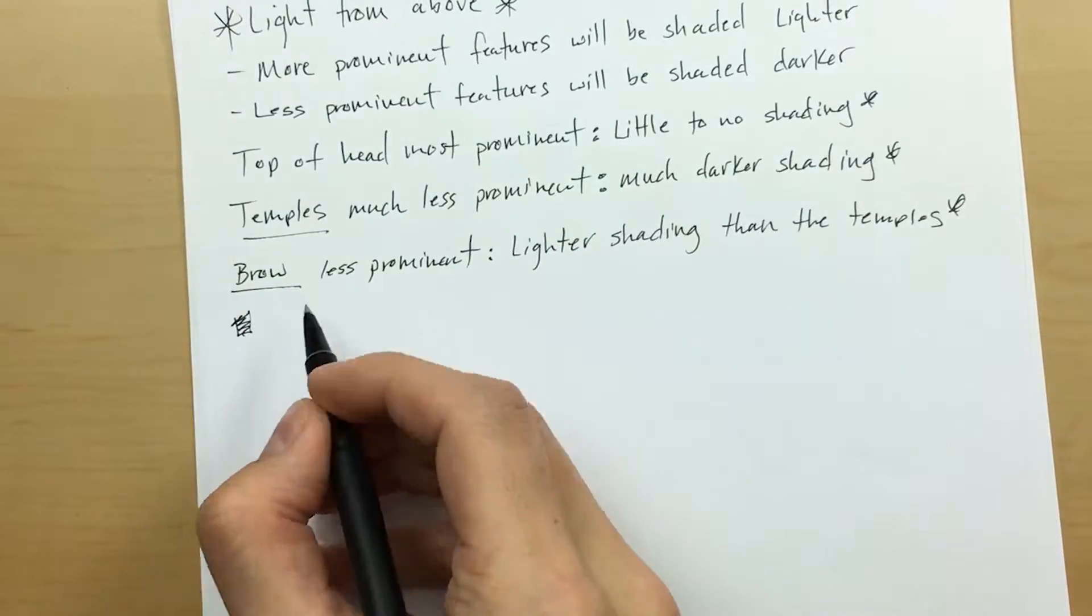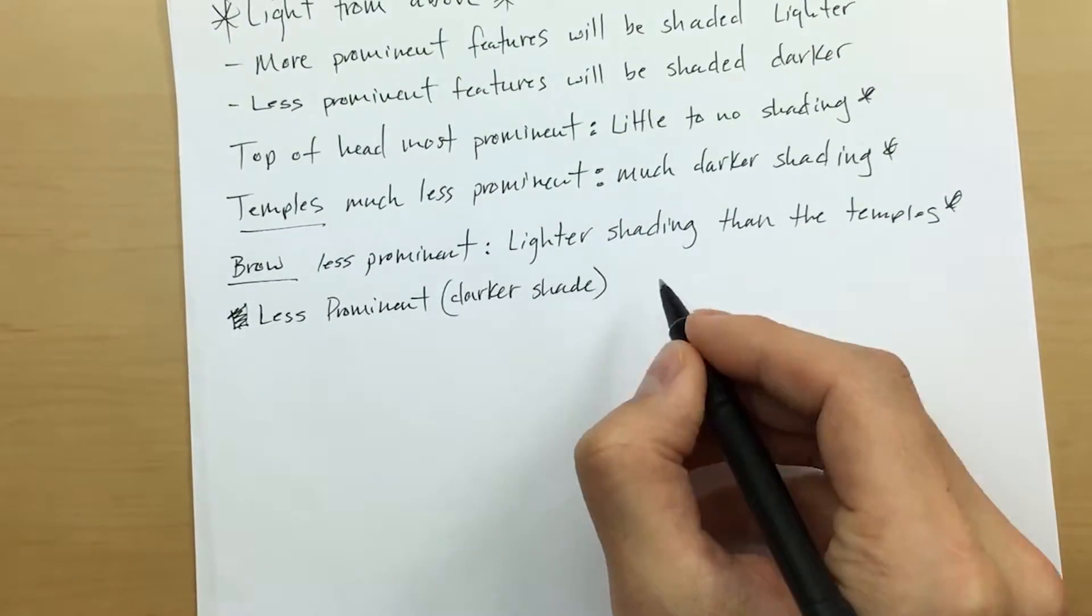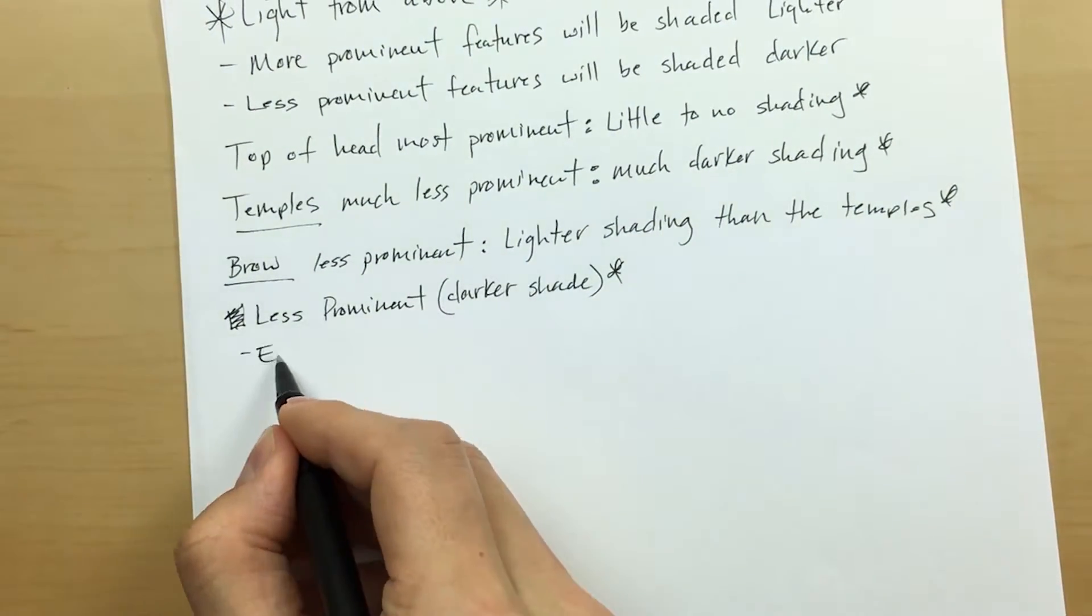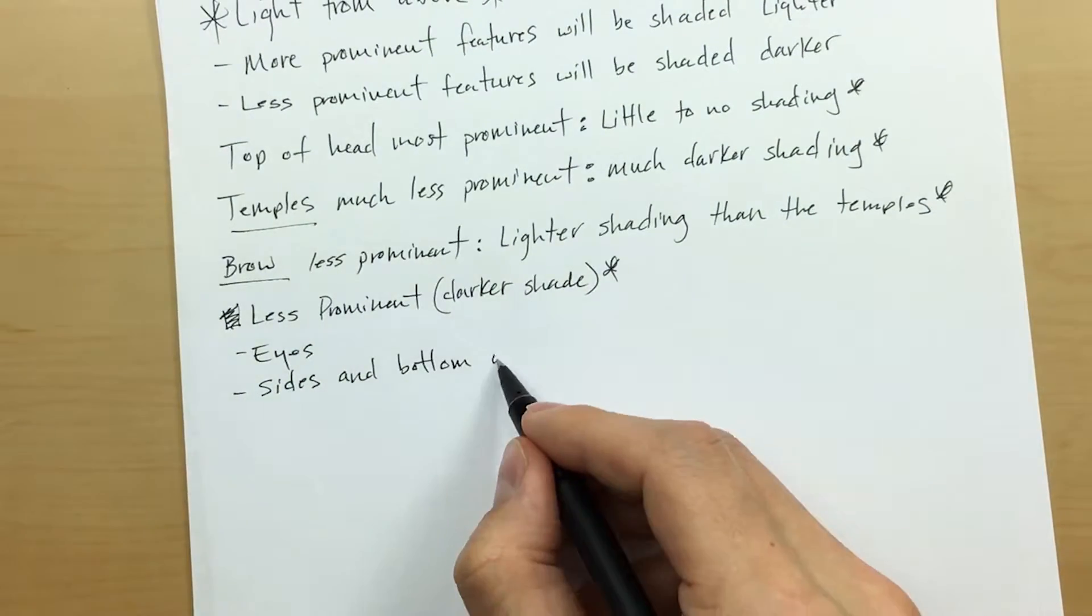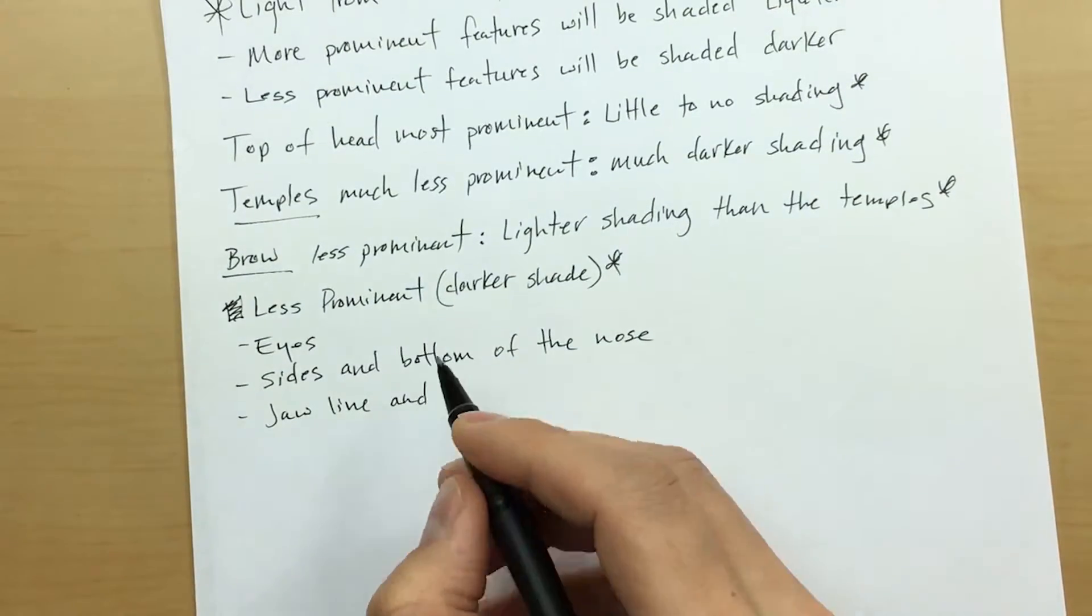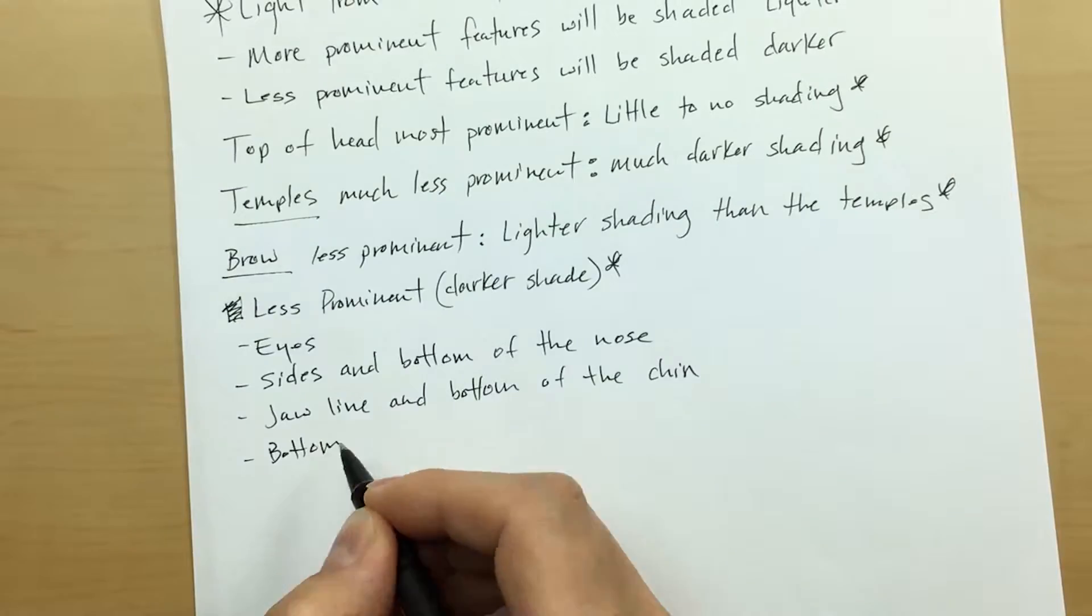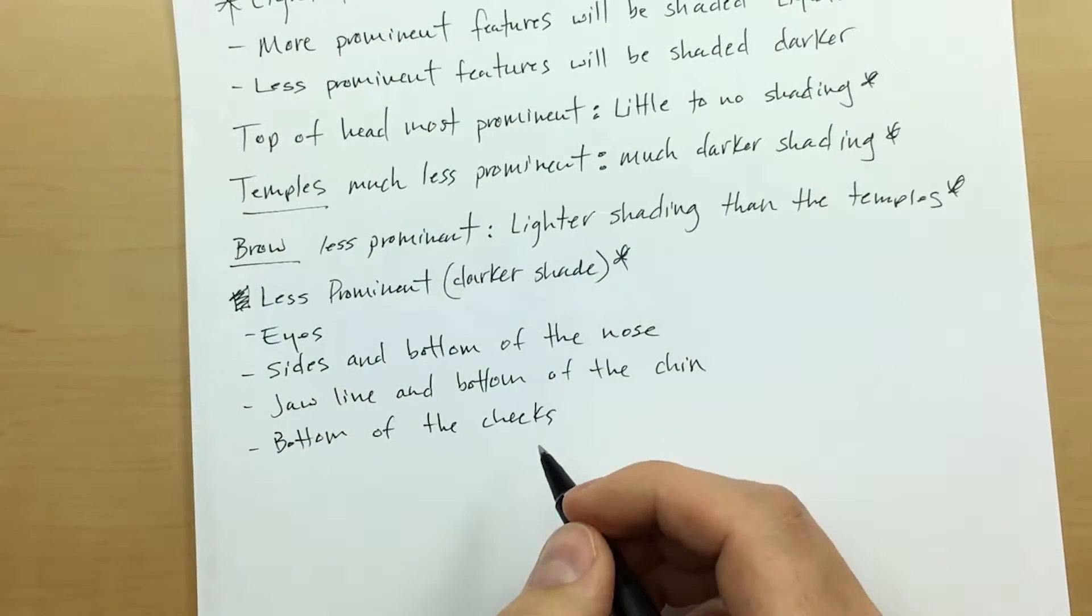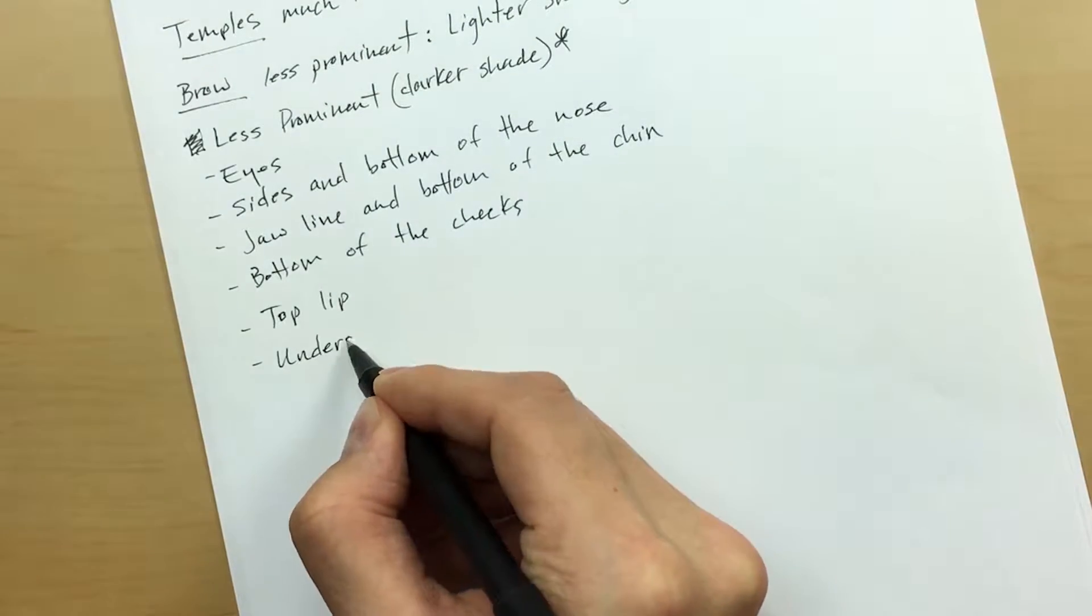Now I want you guys to understand all of the less prominent features of the face, and these are the features that are going to receive the darker shades because they are less prominent. These features include the eyes as well as the sides and the bottom of the nose, the jawline and the bottom of the chin, the bottom of the cheeks, the top lip, as well as the underside of the neck.